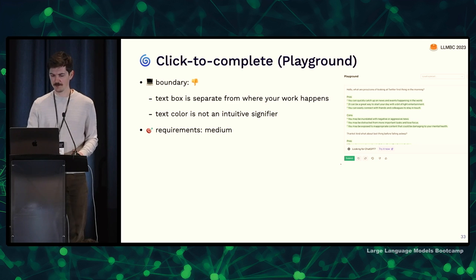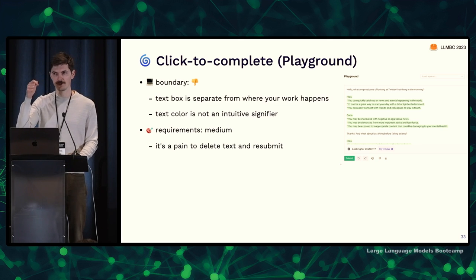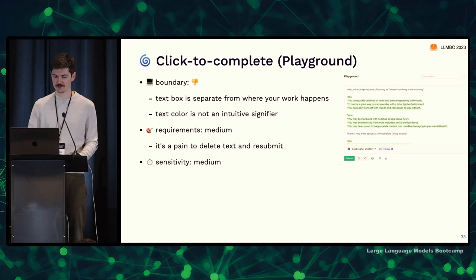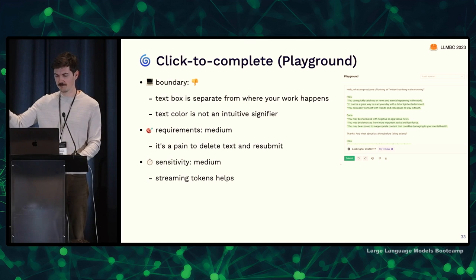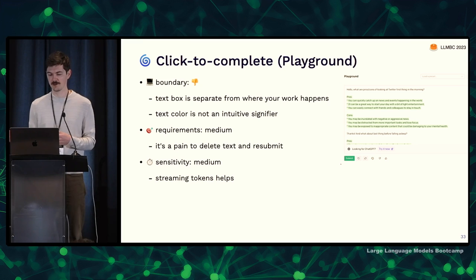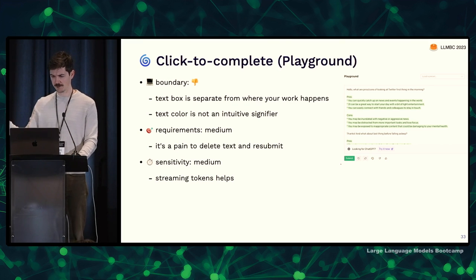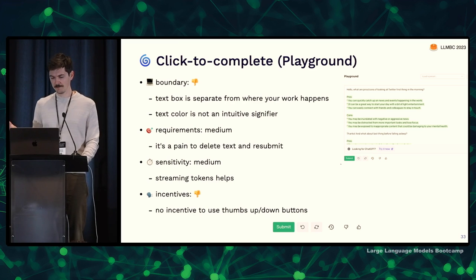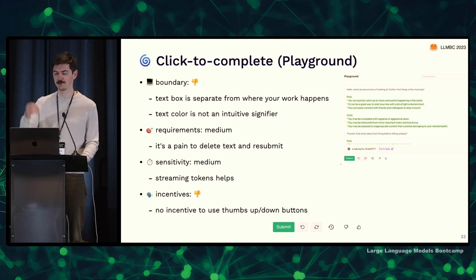The accuracy requirements are medium — if you don't get what you want, it's painful to delete all the green text and resubmit. The sensitivity to latency is also medium — you feel like you're in a special environment talking to an AI, so it's okay if it takes a little time, but too long and you won't use it much. One trick they use is streaming tokens — showing text as it's generated, which makes it seem faster than it actually is. The incentives to provide feedback are bad. There are thumbs up/down buttons, but there's no real incentive to use them instead of just leaving or resubmitting.